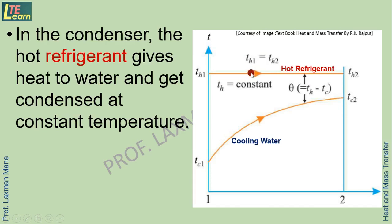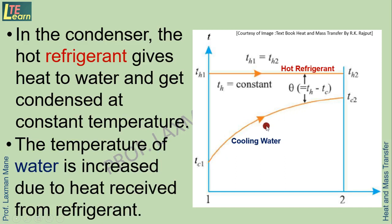This is a phase change process. Since the refrigerant is a two-phase substance, its phase changes from gas to liquid at a constant temperature, meaning THO equals TH2. By absorbing heat from the hot refrigerant, the circulating water gets warmer, so the temperature of the cooling water increases from TC1 to TC2. This is what happens in the condenser.